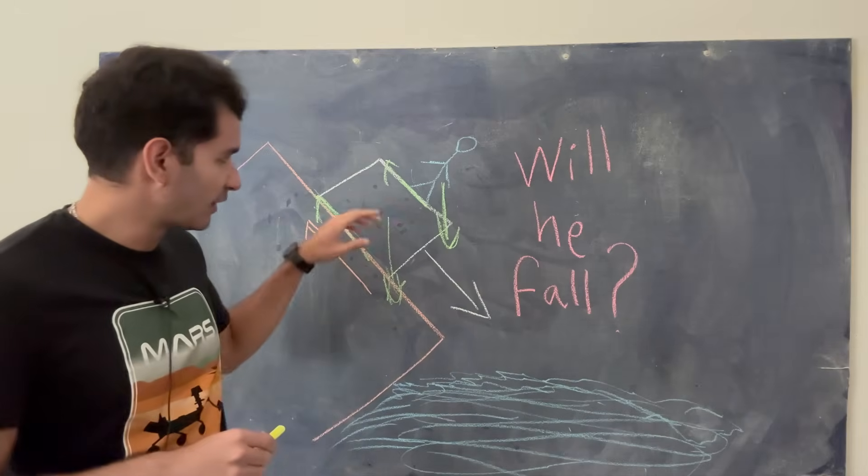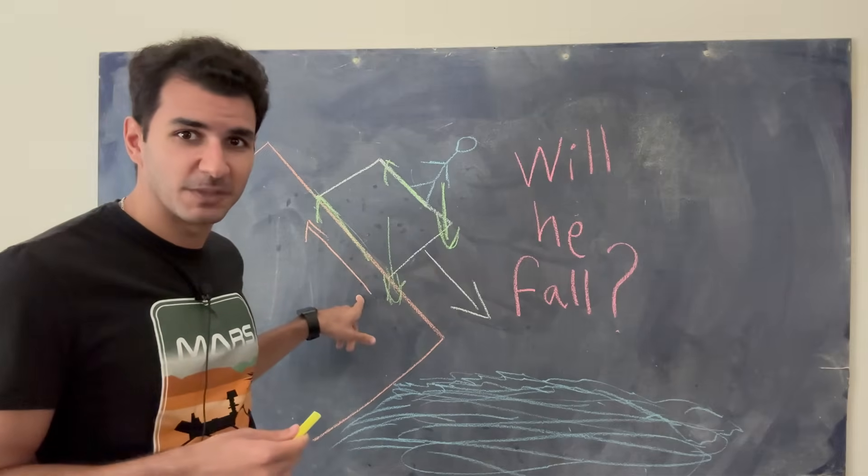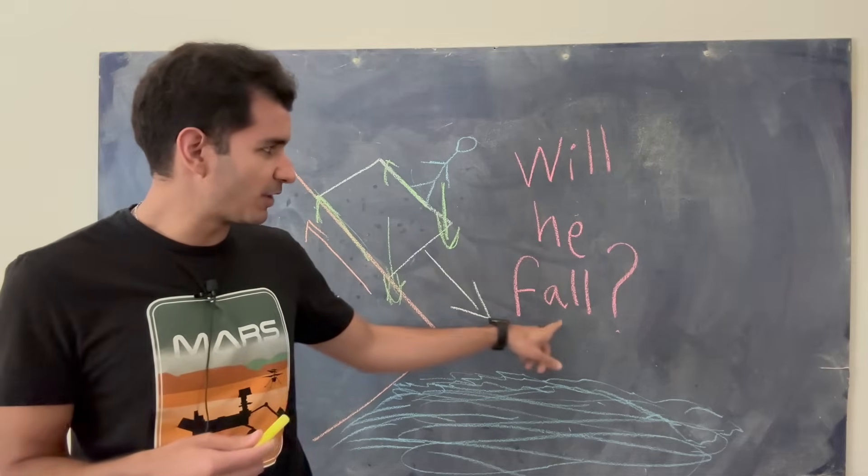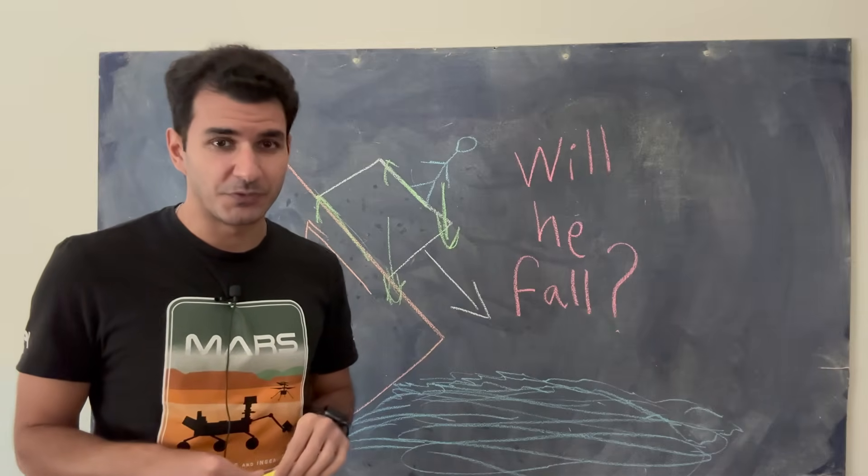We're basically going to look at this dude that's sitting on top of this block, that's sitting on top of this ramp. And we're simply trying to answer the question, is this guy going to fall? Or is this guy going to stay in the same place?